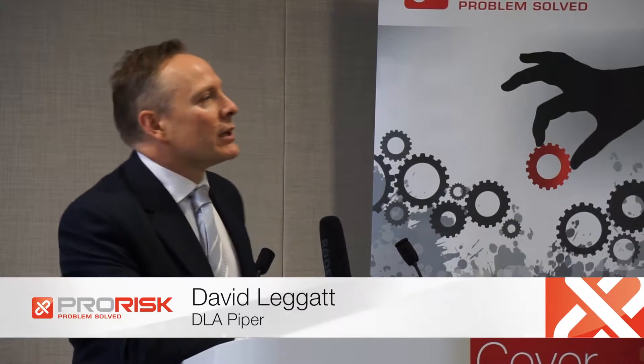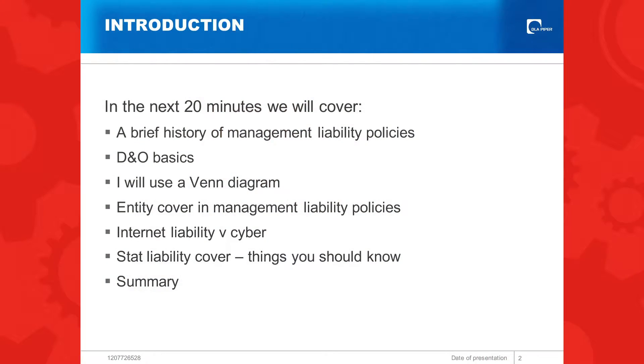Alright, so what are we going to cover in the next 20 minutes? A brief history of management liability policies. I'm going to do D&O basics — those questions you still ask yourselves nowadays — to how we ended up with sides A, B and C. I will use a Venn diagram. And then I'll talk about entity cover and management liability policies, internet liability versus cyber, statutory liability cover — just a few things you should know. Very interesting developments in that market if you're getting into it, and then a quick summary at the end.